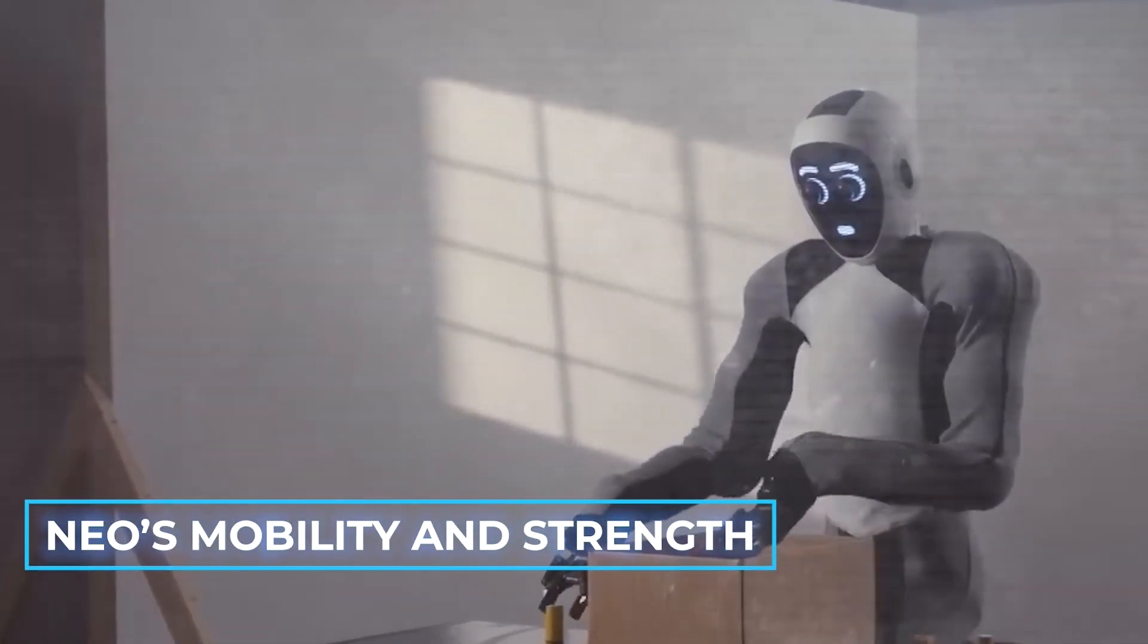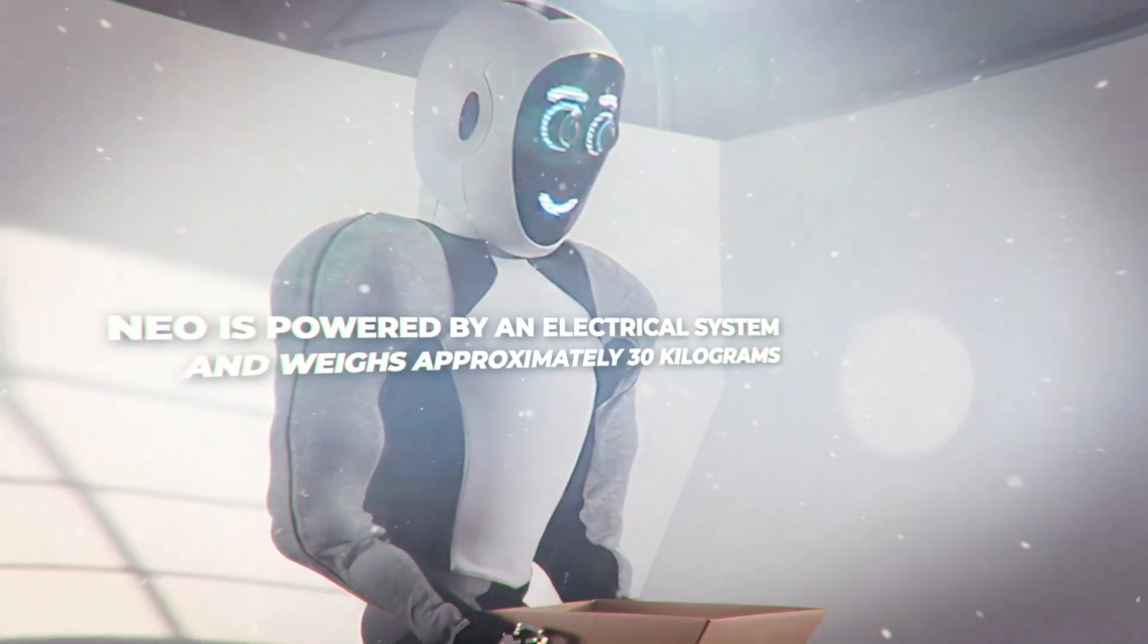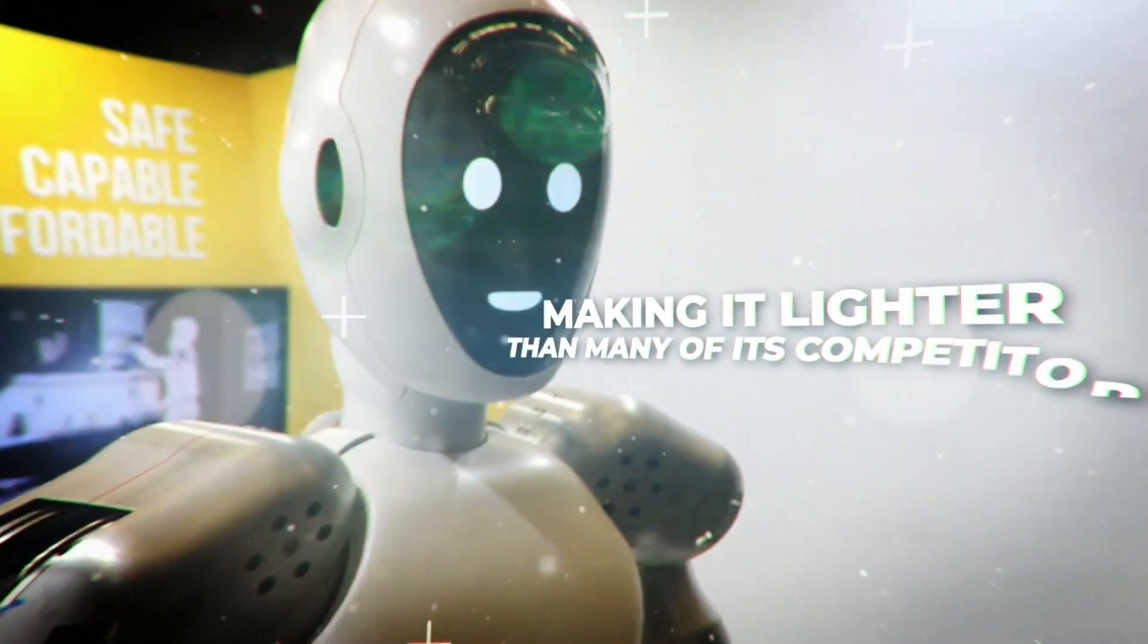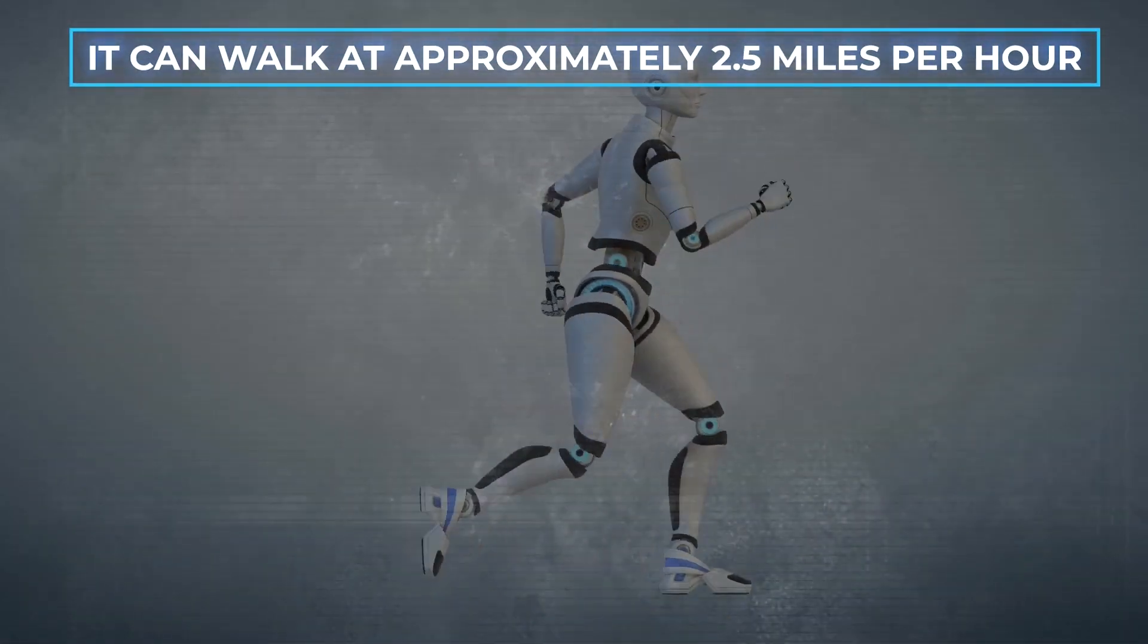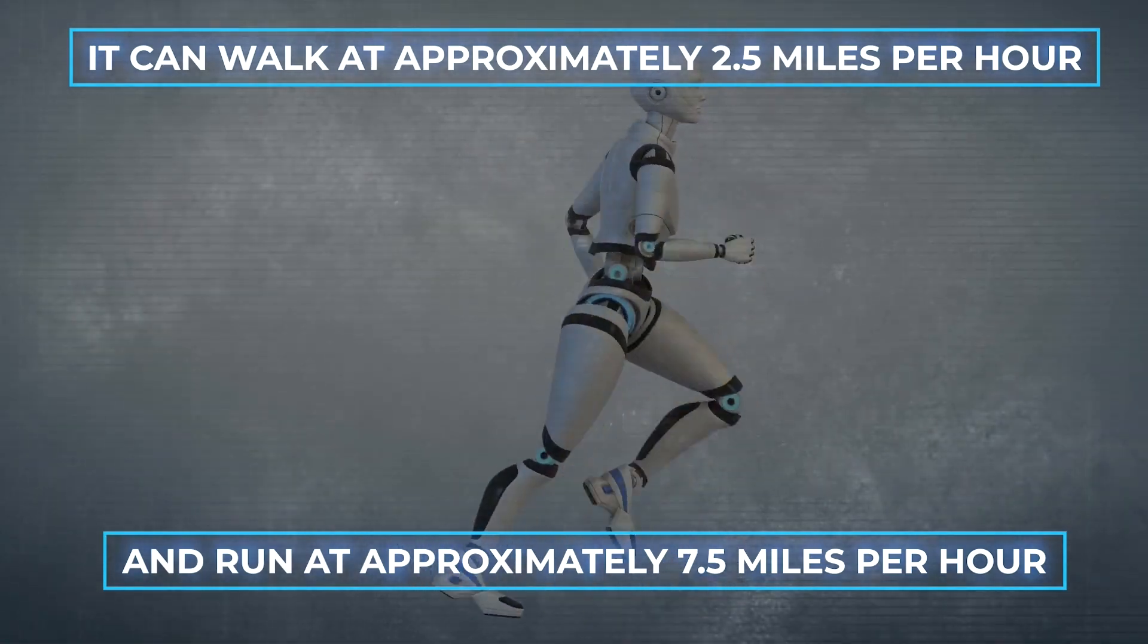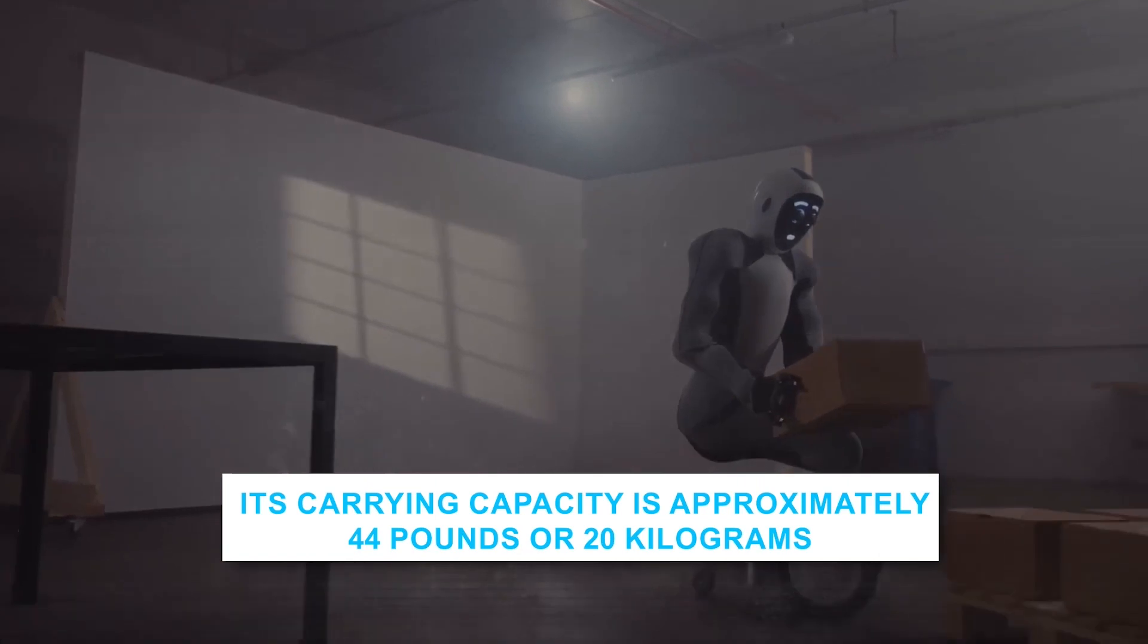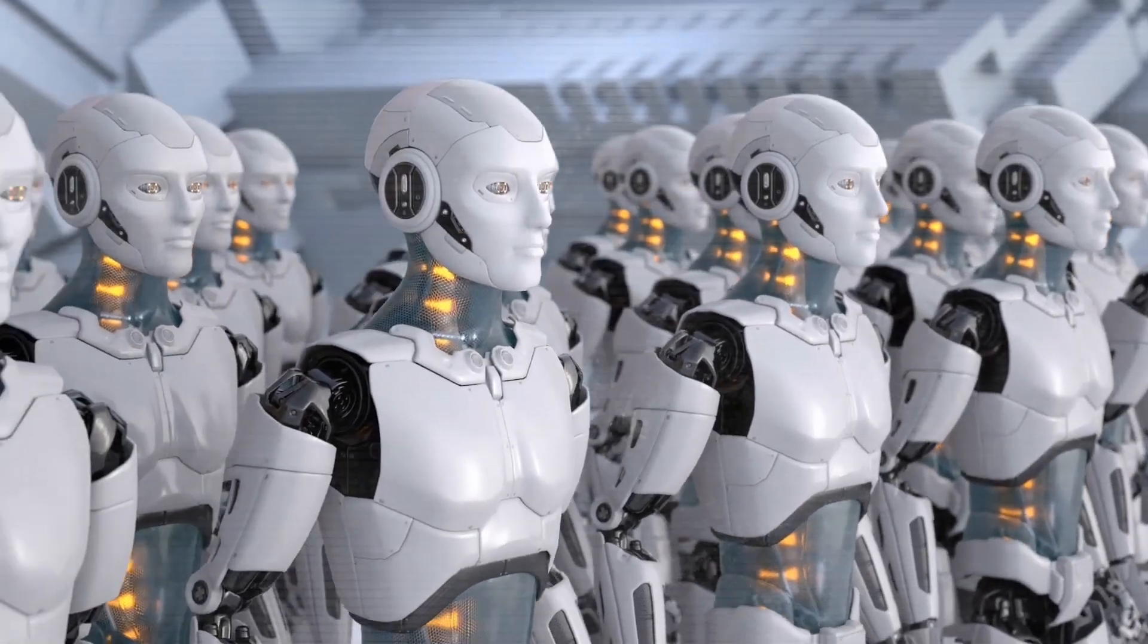NEO is empowered by an electrical system and weighs approximately 30 kilograms, or 66 pounds, making it lighter than many of its competitors. It can walk at approximately 2.5 miles per hour and run at approximately 7.5 miles per hour. Its carrying capacity is approximately 44 pounds, or 20 kilograms, which is astounding given its weight.